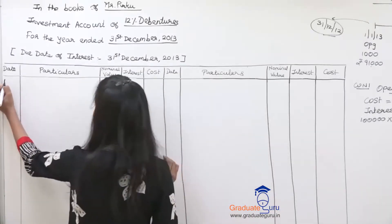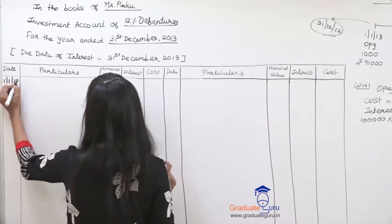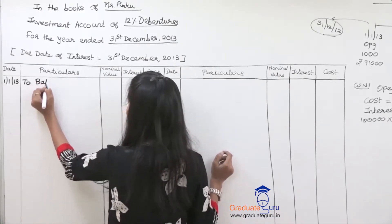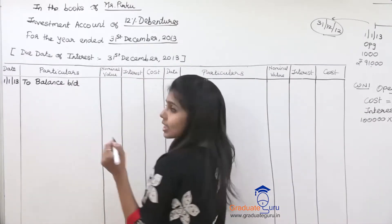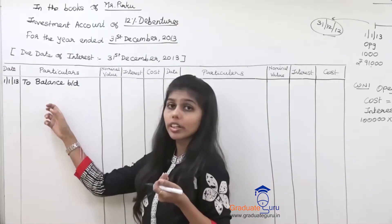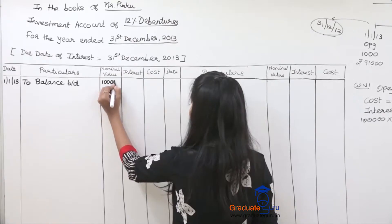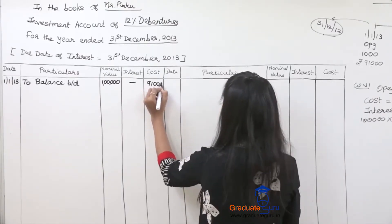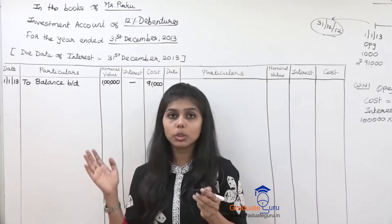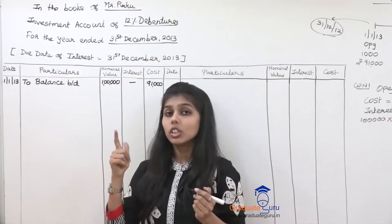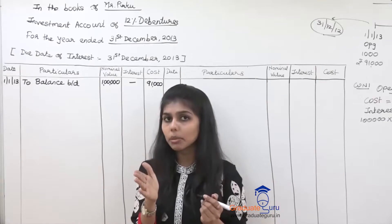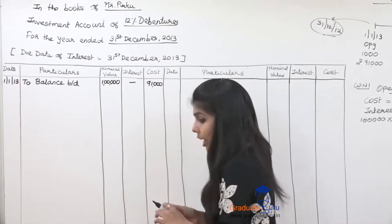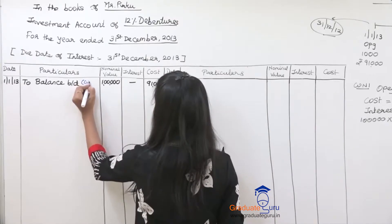Posting to the investment account: date is 1/1/13. Since this is an opening balance, we write 'To Balance Brought Down' — not 'To Bank' because this is not a purchase. Nominal value is Rs. 1,00,000, interest is nil, and cost is Rs. 91,000. Working Note 1 reference is noted.